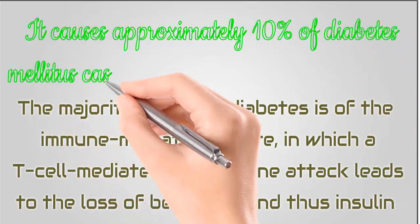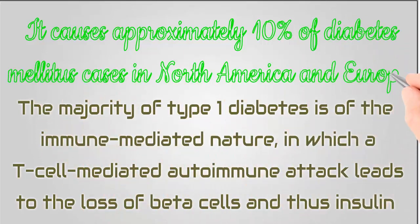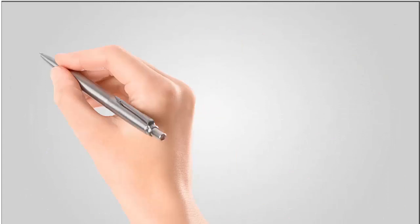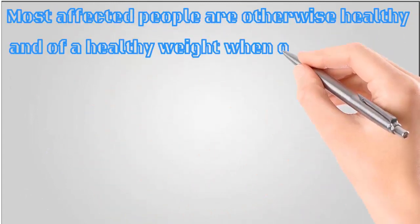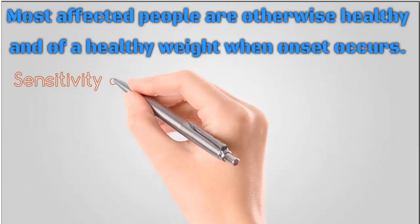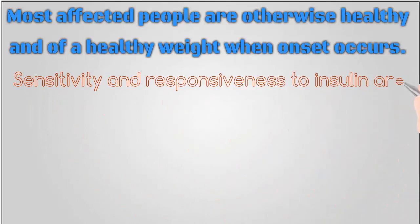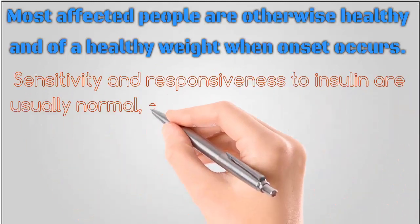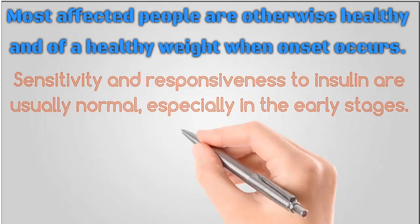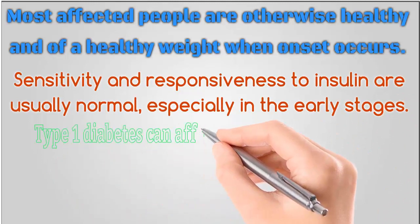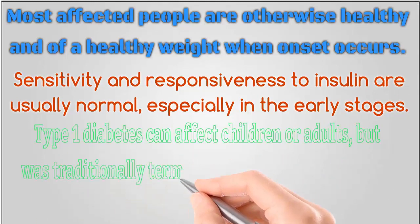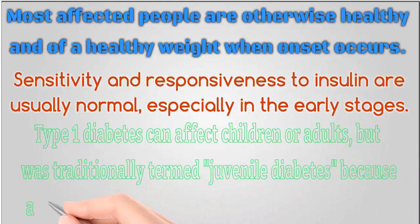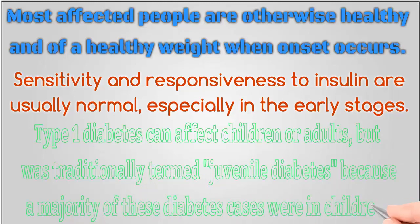It causes approximately 10 percent of diabetes mellitus cases in North America and Europe. Most affected people are otherwise healthy and of a healthy weight when onset occurs. Sensitivity and responsiveness to insulin are usually normal, especially in the early stages. Type 1 diabetes can affect children or adults, but was traditionally termed juvenile diabetes because a majority of these cases were in children.